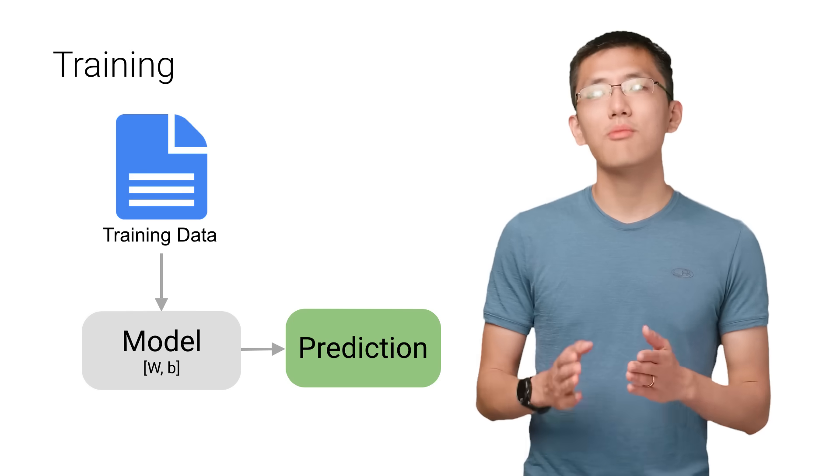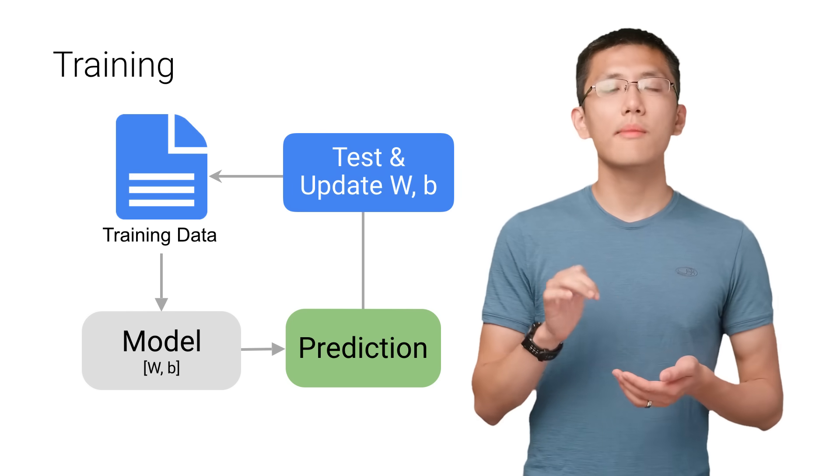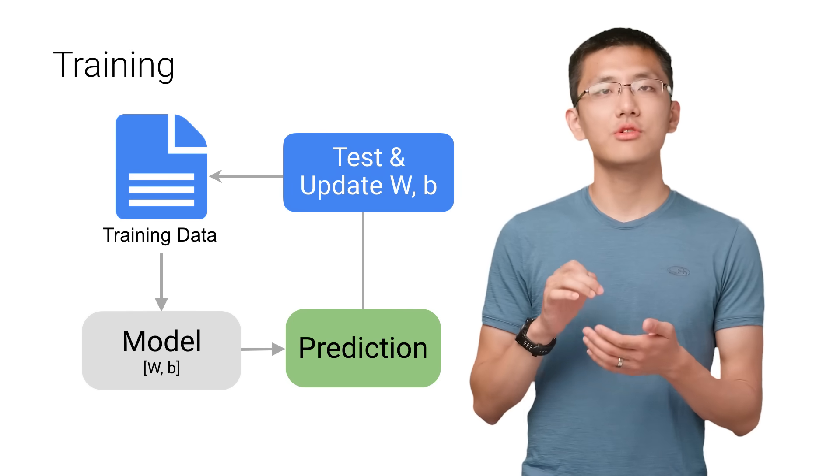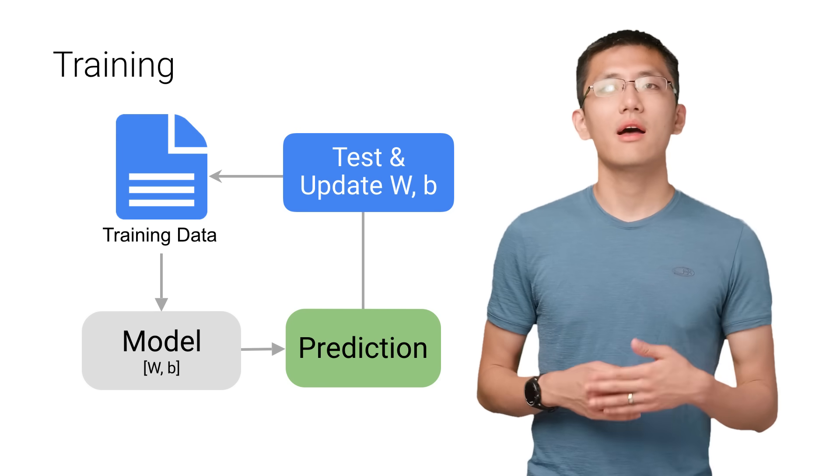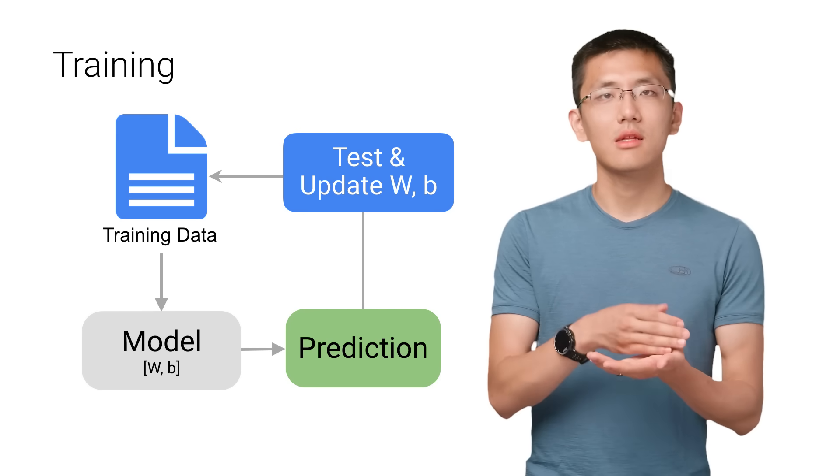But we can compare our model's predictions with the output that it should have produced, and adjust the values in w and b, so that we will have more accurate predictions on the next time around.